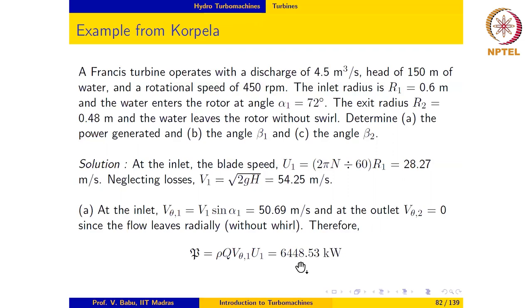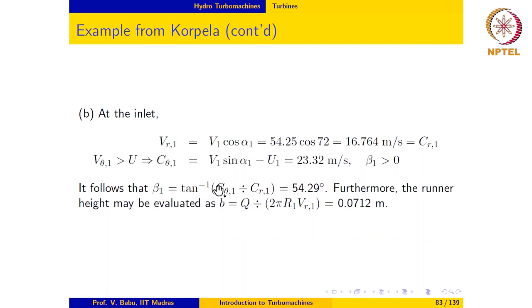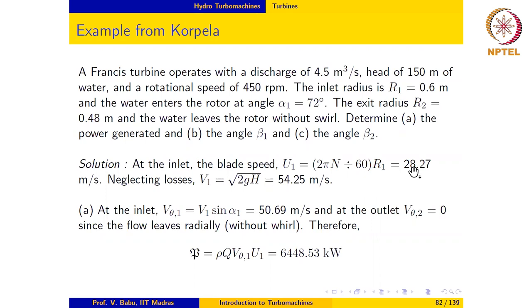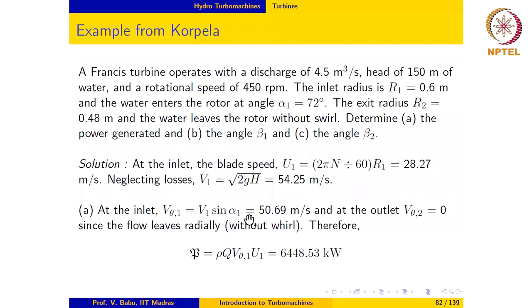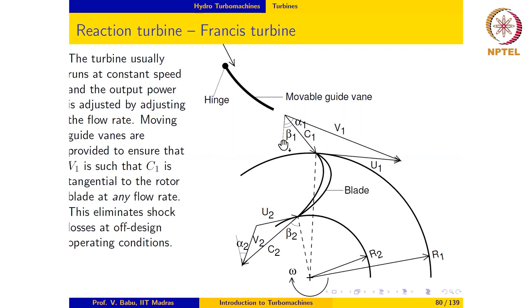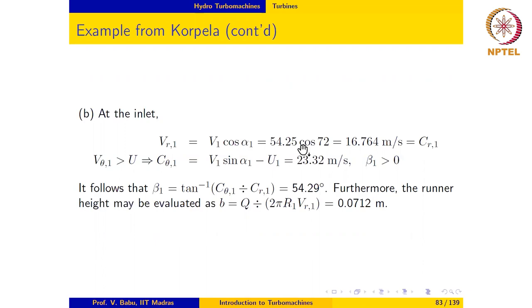At the inlet we may write the radial velocity Vr₁ as V₁ cos α₁ which gives Vr₁ as 16.764 m/s which is the same as Cr₁. Since Vθ₁ which is 50.69 is greater than U₁ which is 28.27, we may write Cθ₁ as Vθ₁ - U₁ which gives Cθ₁ as 23.32 m/s and we have already made the observation that β₁ is going to be positive. So looking at this velocity triangle, the relative velocity vector is in a counterclockwise direction from the reference direction so we expect β₁ to be greater than zero. So with the calculated values of Cr₁ and Cθ₁ we may evaluate β₁ as arctan(Cθ₁/Cr₁) which gives us 54.29°.